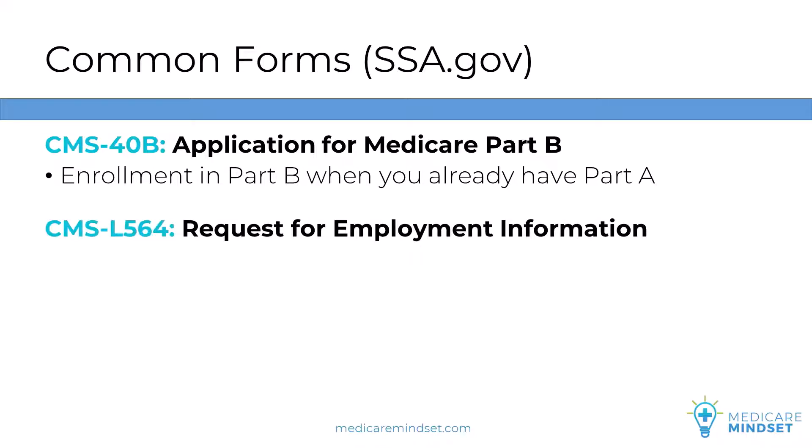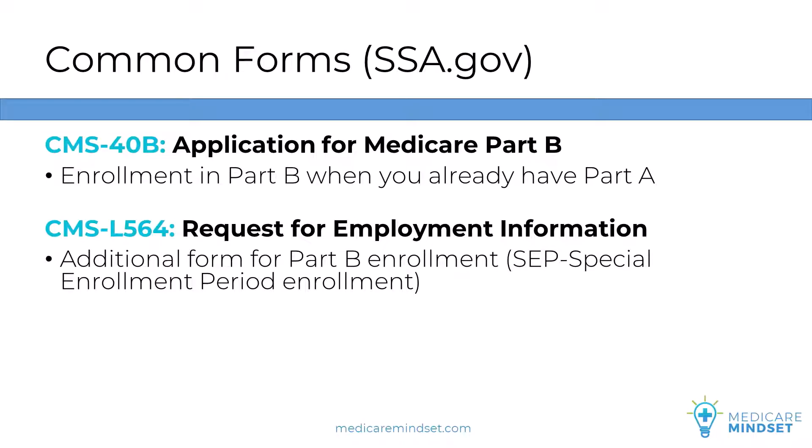Form CMS-L564 is the Request for Employment Information. This is an additional form that goes along with Form CMS-40B when adding Part B after your 7-month initial enrollment period in Medicare has ended — it's called an SEP, or Special Enrollment Period enrollment. We will link to our video on how to enroll in Medicare after age 65 in the description below.